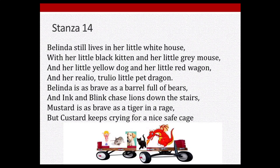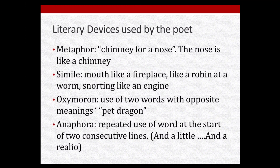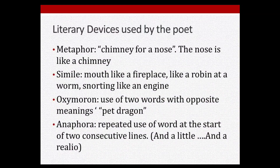Now let us discuss the poetic devices — also called literary devices or figures of speech. The poet has used many figures of speech in this poem. First: metaphor. 'Chimney for a nose' — the nose is compared to a chimney. When we compare two things without using 'like' or 'as,' it is called a metaphor. Second: simile. There are many examples — 'mouth like a fireplace,' 'like a robin at a worm,' 'snorting like an engine.' Whenever the poet uses 'like' or 'as' to compare two things, that is a simile.